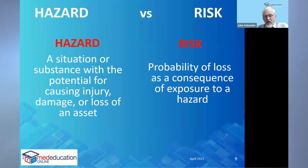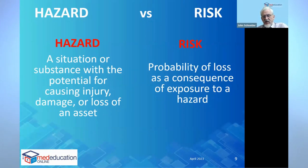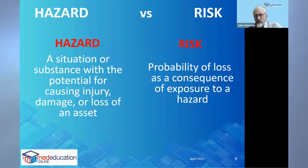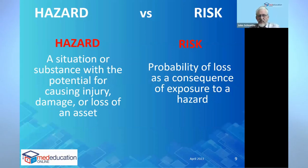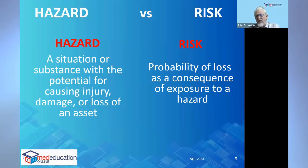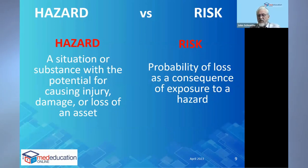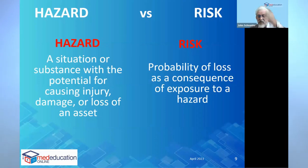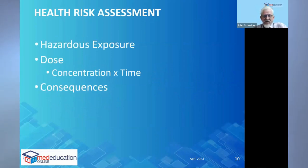A hazard is a situation or substance with the potential for causing injury, damage or loss of an asset. Risk is a determination of the probability of loss as a consequence of exposure. Lots of people confuse the two — they talk about risks when they're really talking about a hazard. Risk involves determining the consequences and the probability that something will happen. There are lots of hazards around, but if people aren't exposed to them there is no risk or adverse consequence.